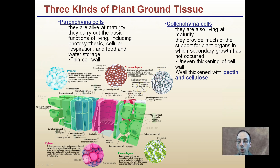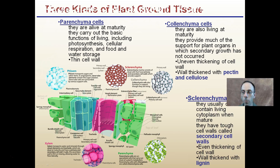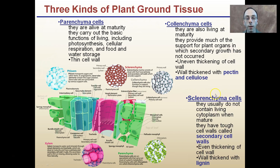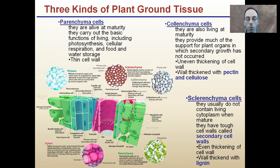Collenchyma cells also function in support, even though they are living. The last type is sclerenchyma cells. They usually do not contain living cytoplasm when mature. They have tough cell walls and secondary cell walls, with even thickening of the cell wall, and the wall is thickened with lignin. Sclerenchyma are mainly dead cells with primary and secondary cell walls that provide support. You can see sclerenchyma are very thick, collenchyma very uneven, and parenchyma containing chloroplasts.